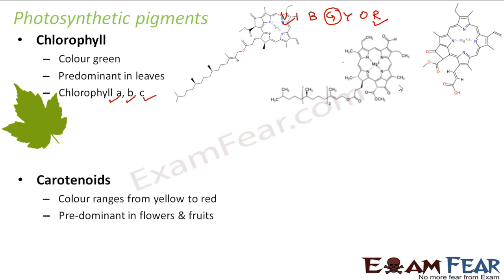The next type of pigment is carotenoids. Carotenoids are pigments whose color ranges from yellow to red. They are predominant in flowers and fruits — that is why leaves are green while flowers and fruits are colorful. Carotenoids absorb light in the blue region of the spectrum, so the colors transmitted are yellow, orange, or red. They absorb from regions of the visible spectrum not covered by chlorophyll.